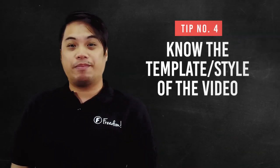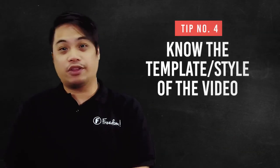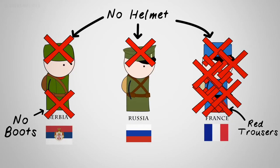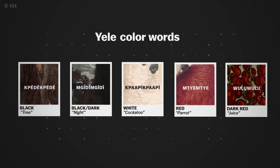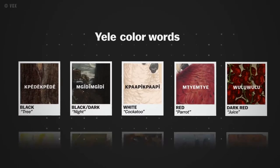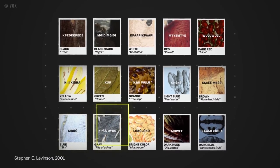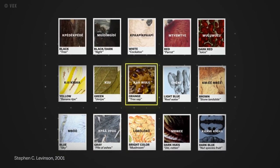Number four: know the template or the style of your videos. It's good to have a template because it will make things consistent. Consistency is key because the audience will have expectations. If you do 3D infographics, keep it 3D. If you want to change your content, plan it ahead of time so that your audience expectations will be managed.